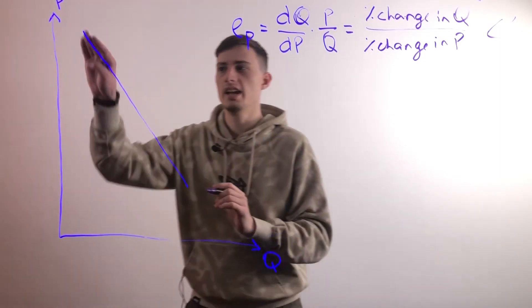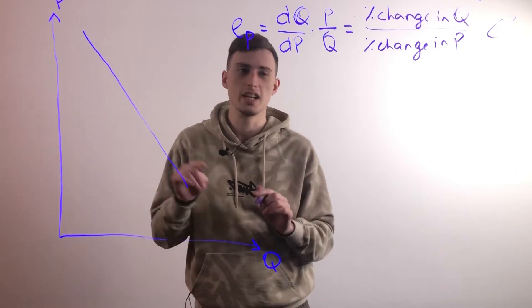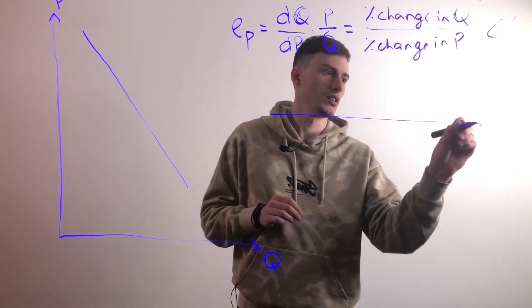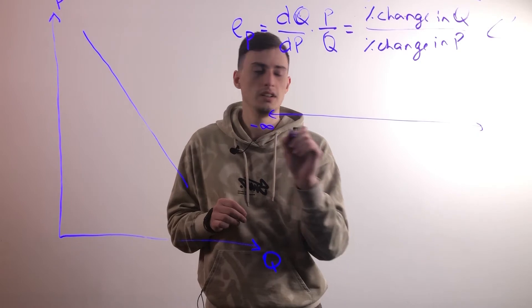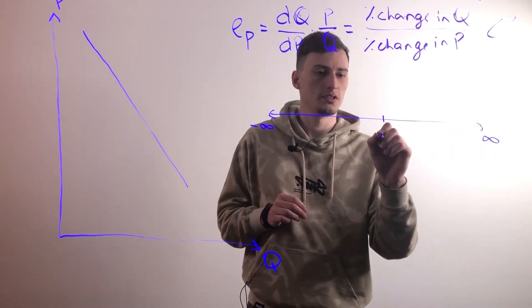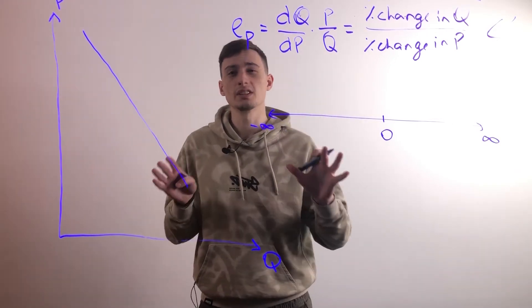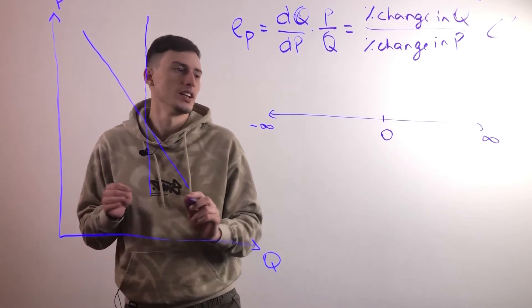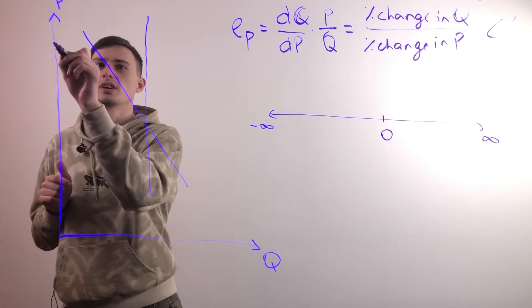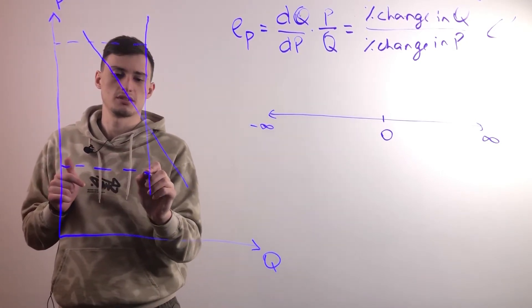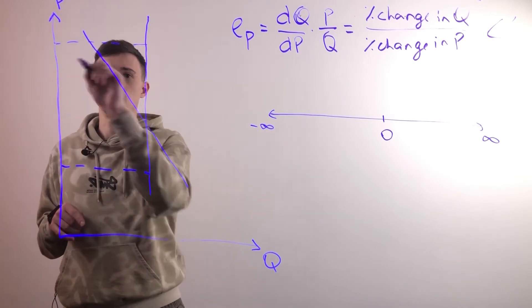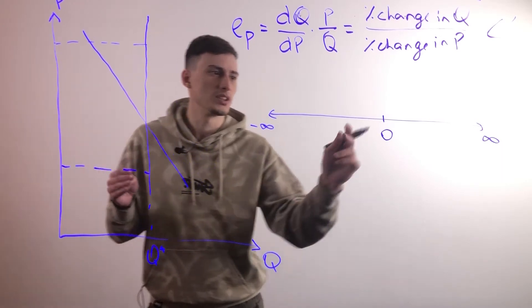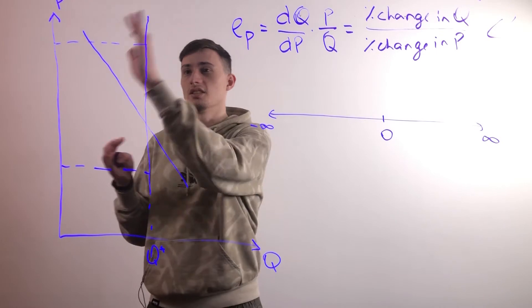This is unitary elasticity with an elasticity of negative one. Now let's talk about the different numbers and what they mean. So we have a number line going from negative infinity to positive infinity with zero in the middle. Zero is called perfectly inelastic and that is a vertical line. What does that mean? So if you have a really high price here and then the price all of a sudden drops, or the other way around, you have a price over here and the price goes up, the quantity demanded doesn't change at all. It stays fixed because the elasticity is zero.